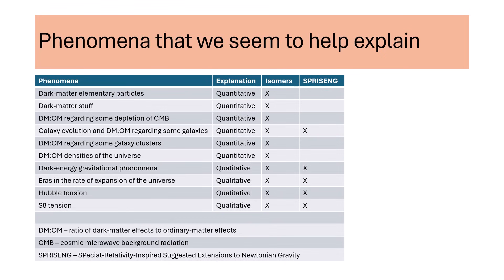Introduction. This is a list of phenomena that we seem to help explain. The first six types of phenomena involve dark matter elementary particles and stuff that associates with those particles. These explanations tend to be quantitative. The other four types of phenomena pertain to large-scale effects. We use our notions of dark matter and our notions of new gravitational properties of objects. These explanations tend to be qualitative.